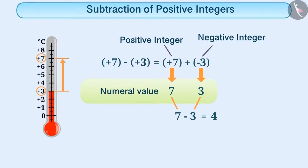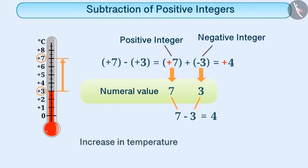Now, we will put the sign of the number whose numeral value is larger, which is plus. Therefore, the result will be plus 4. From the result, it is clear that there is an increase of 4 degrees centigrade in the temperature.